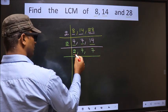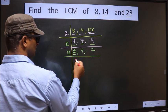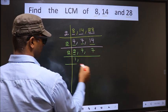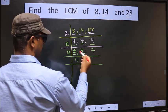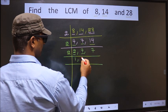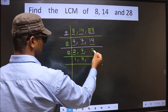Here we have 2. 2 is a prime number, so 2 ones are 2. The other number 7 is not divisible by 2, so we write it down as it is.